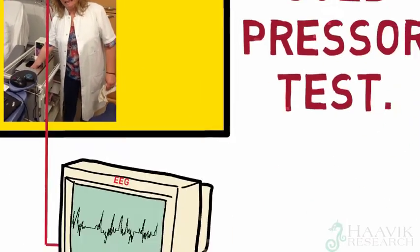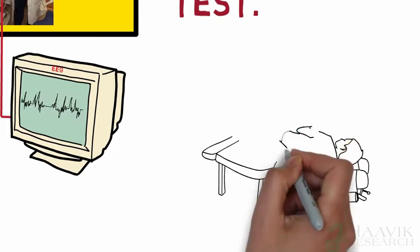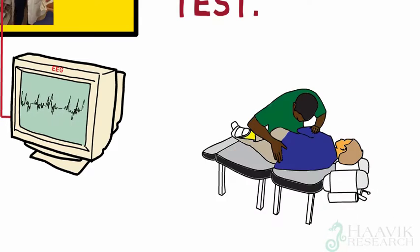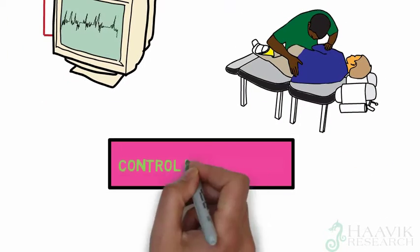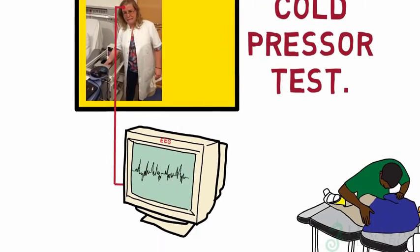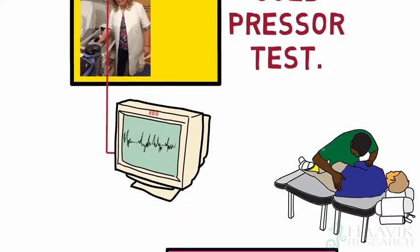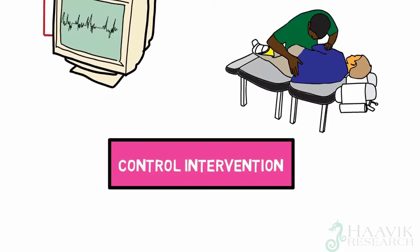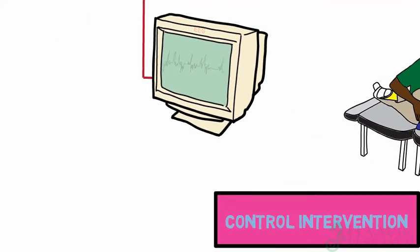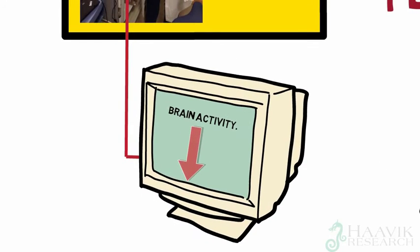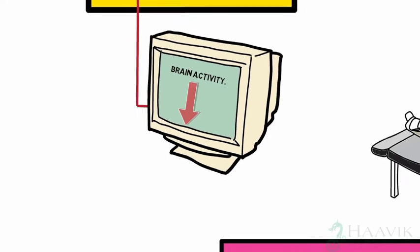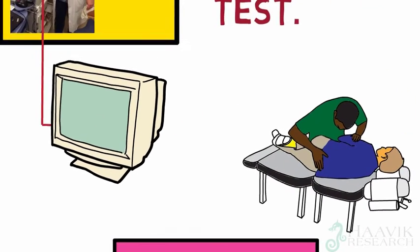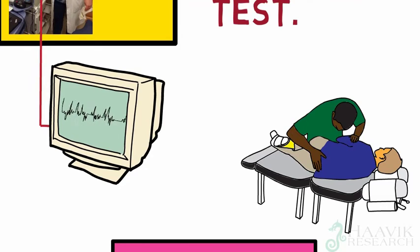The participants then either received a single session of chiropractic care or a control intervention, and then they did the cold pressor test again while their brain activity was recorded. What the scientists found was that after the inactive control intervention, the participants' brain activity decreased when they repeated the cold pressor test, but there were no changes in brain activity during the cold pressor test after the chiropractic spinal adjustment session.